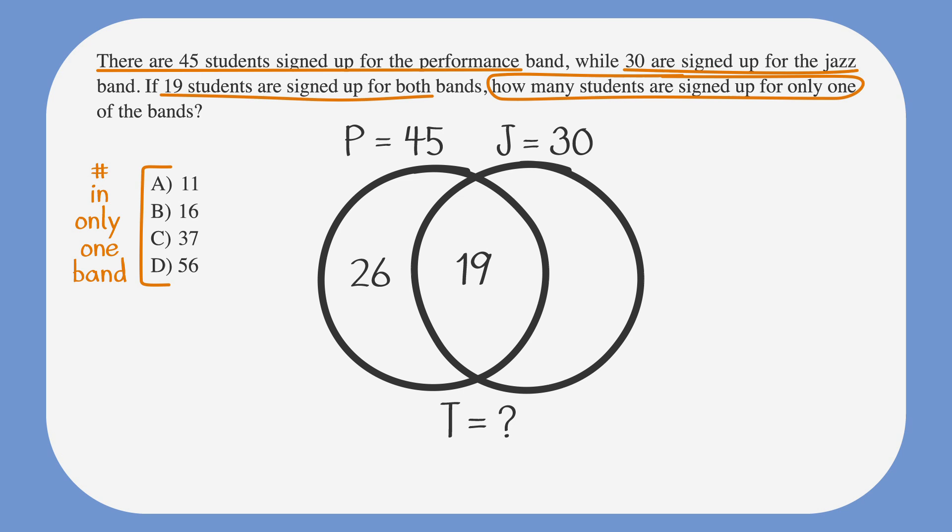Now we want to do the same to calculate the number of students who are only in the jazz band. So we want to subtract 19 from 30, which gives us 11. 11 students are only members of the jazz band.